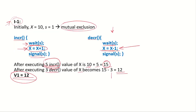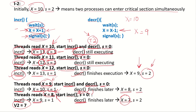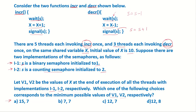So in Implementation 1 the final value was v1 = 12, and in Implementation 2 the final value is v2 = 7. Out of the given options, this corresponds to the correct answer.